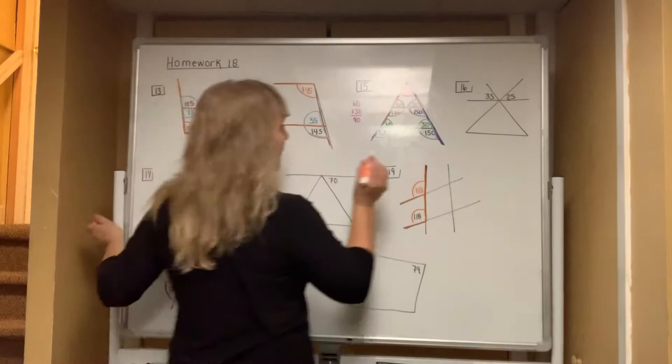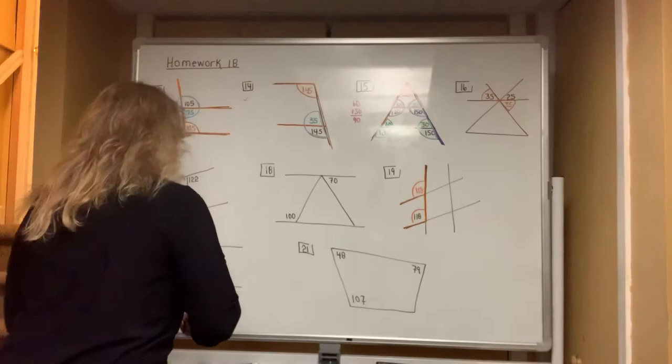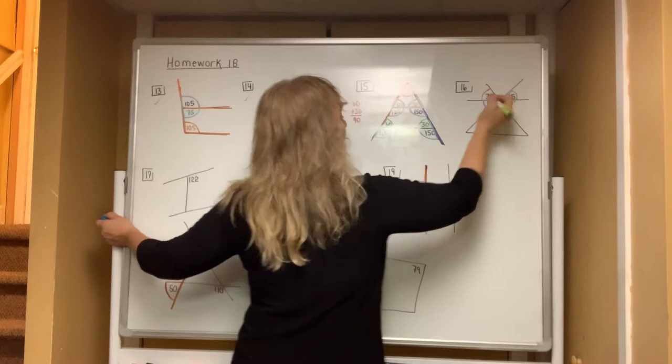In number 16, I see bow ties. This angle matches this one, so this is definitely 35 degrees — it makes the X for the bow tie. The 25 is also part of a bow tie, and you can see the X right here, so both of those are 25.